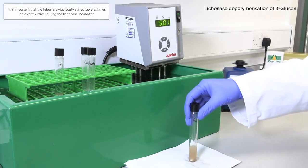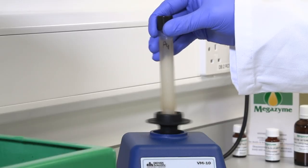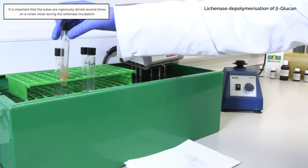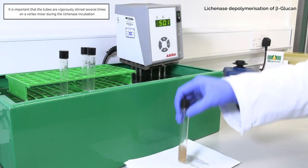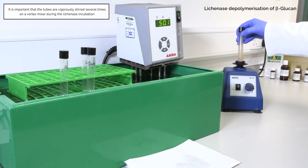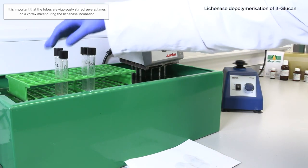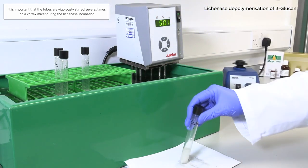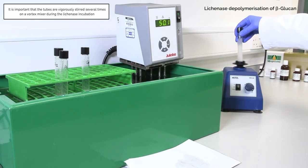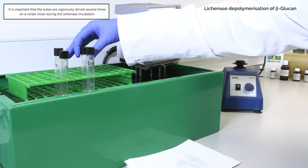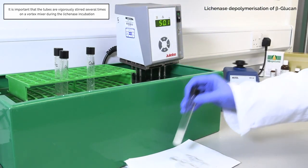For samples which contain a very high level of beta-glucan content, the beta-glucan can form gel particles that stick to the side of the test tube. Therefore, with these samples it is important that the tubes are vigorously stirred several times on a vortex mixer during the lichenase incubation to allow the lichenase enzyme to come in contact with the beta-glucan to break it down into soluble oligosaccharides.